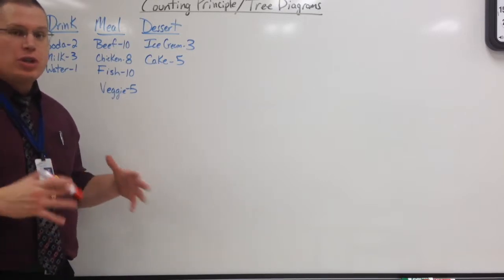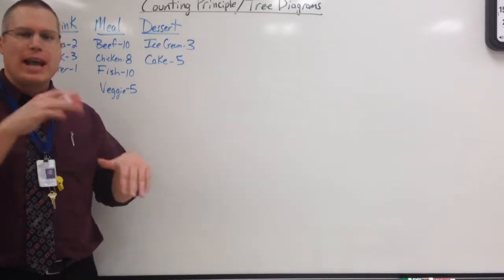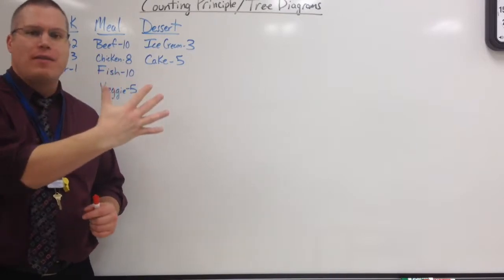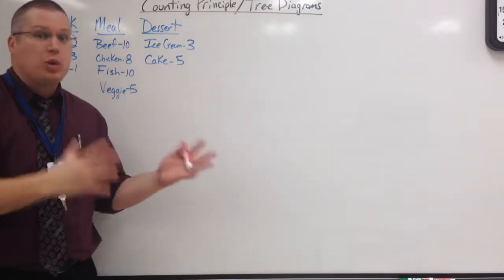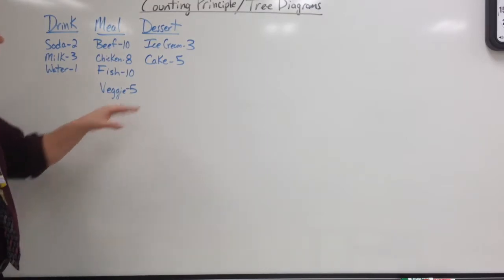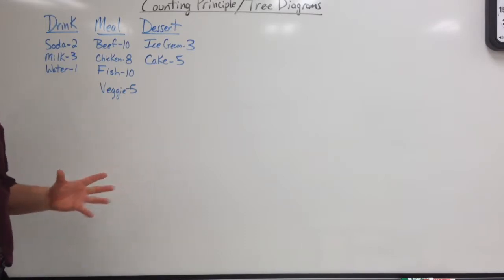There are times when you just want to know how many different options are there. For instance, I have a drink with three choices, a meal with four choices, and dessert with two choices. How many different meal combinations could I put together? How many different possible outcomes are there?